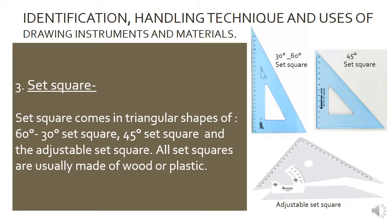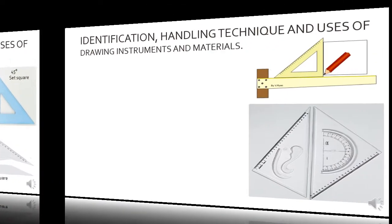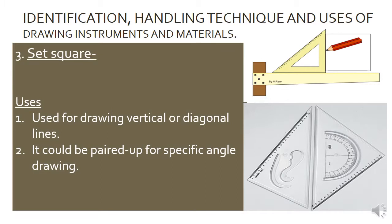Set square comes in triangular shapes of 60-degree, 30-degree, and 45-degree, as well as the adjustable type. All set squares are usually made of wood or plastic. Uses: Set square is used for drawing vertical or diagonal lines, and it can be paired up for specific angle drawing.